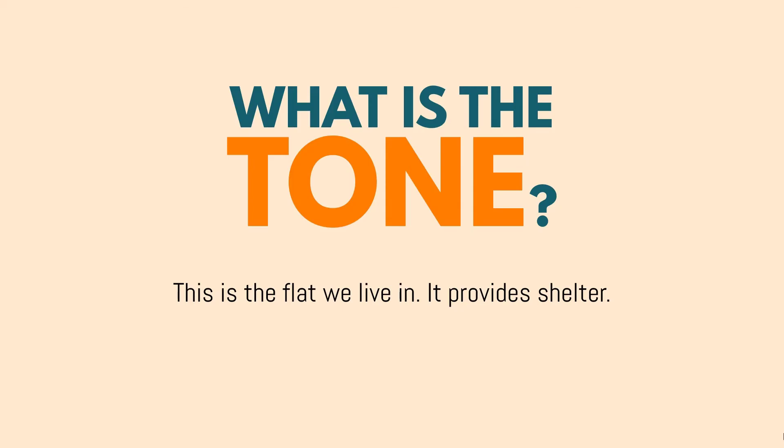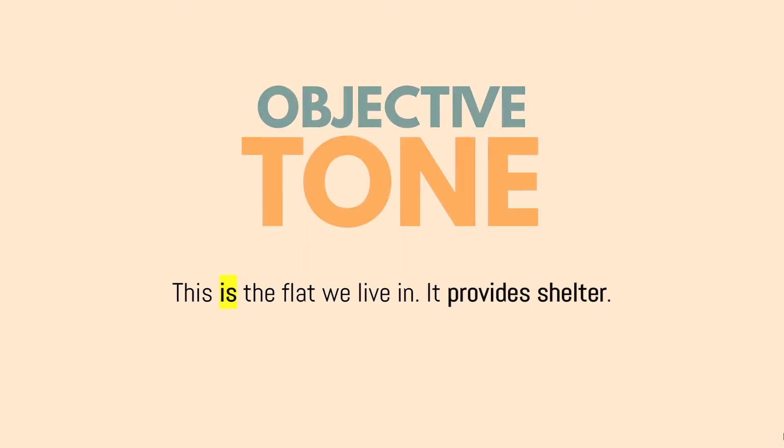Last but not least, for the example: 'This is the flat we live in. It provides shelter.' The tone for this case is objective. The author actually states that the flat is the one that they are living in, so it is a fact. And the fact that the flat provides shelter is true as well. So this is an objective tone.